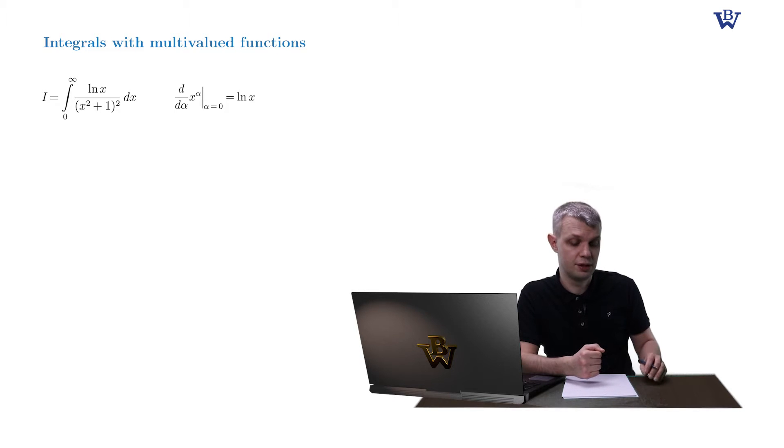As a start, we have a log function which has a branch point at the origin and branch cut going to some direction to infinity. So step one, we should choose the branch cut in such a way that it coincides with our contour. That means that we choose our branch cut starting at the origin and going right to plus infinity. Like this.